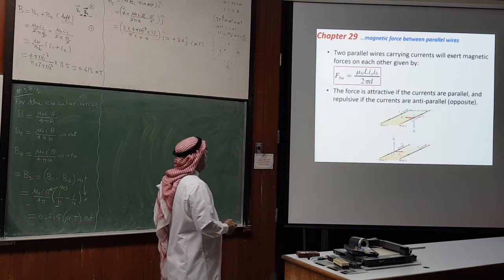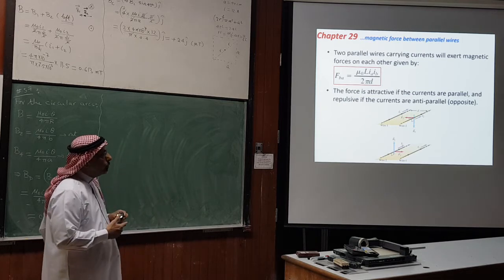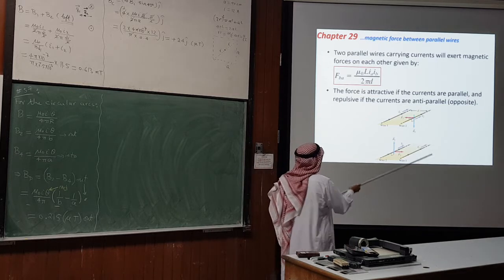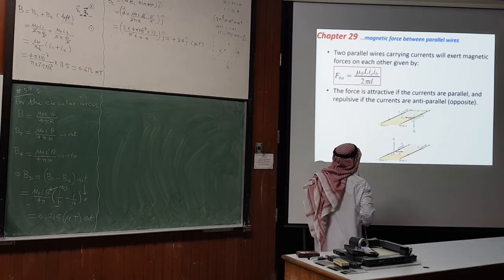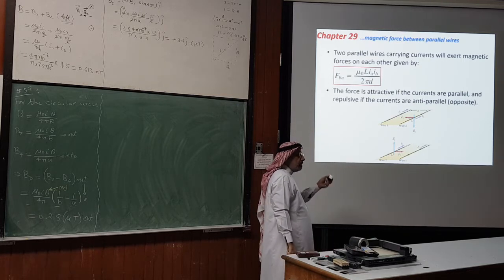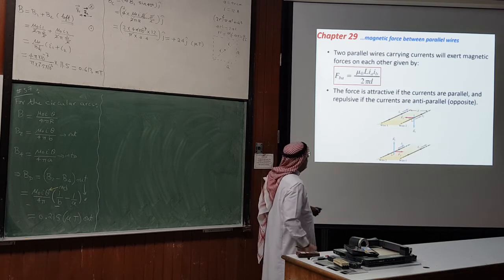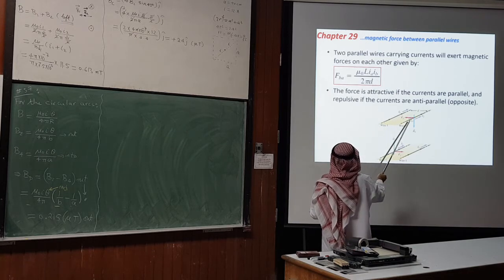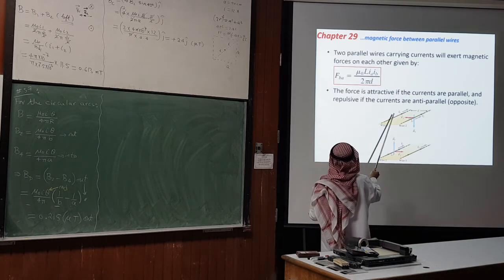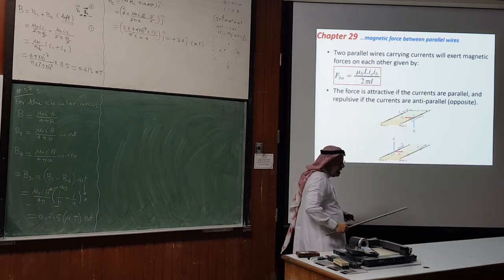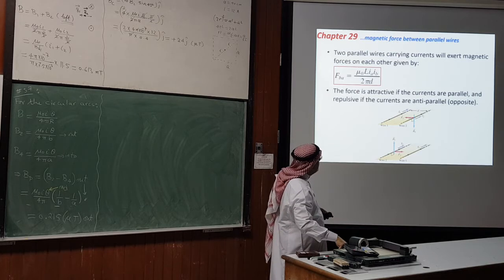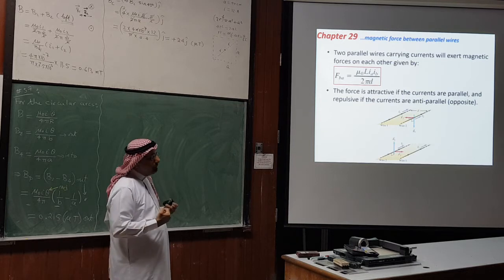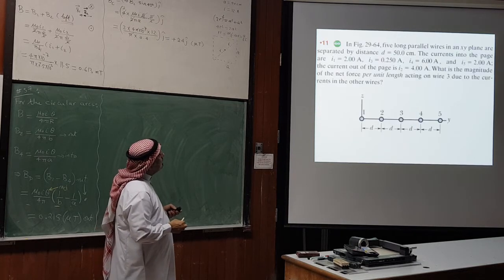Moving to the next concept: the magnetic force between parallel wires. If two parallel wires carry currents, they exert magnetic forces on each other. The force per unit length is μ₀IₐI_b / (2πd), where d is the distance between them. If the currents are in the same direction, the force is attractive; if opposite, it is repulsive.